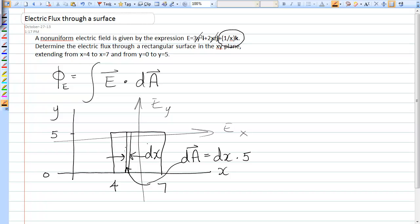The direction of this area vector would be in the k-hat direction. So dA points perpendicular to the area, so it has a k-hat.